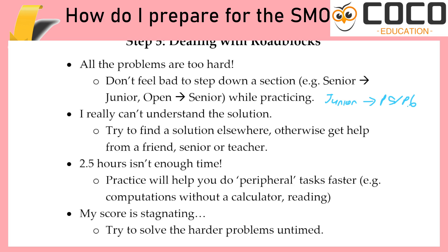The third issue is about time. When you say two and a half hours isn't enough time, this is usually a good sign. Why? Because if you can only solve two questions, you wouldn't be running out of time. In order to be running out of time, you must at least be doing a meaningful number of questions — so this is a good thing. Keep on practicing and you'll find that things like mental calculations improve. The SMO has no calculators, which is one of the headaches at the start, but practice will help speed that aspect up.